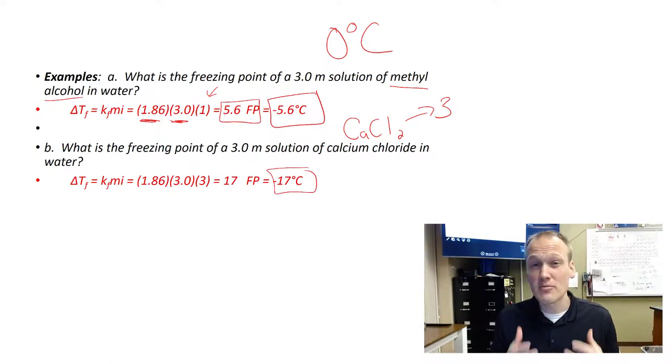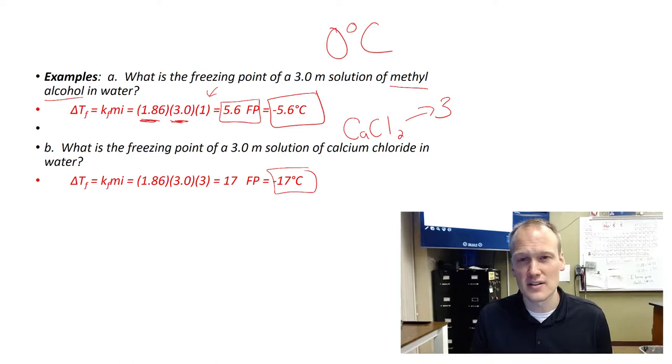There are other colligative properties. Vapor pressure is changed by the amount of solute and osmotic pressure is changed by the amount of solute, but both of those will be dealt with in an AP Chem course. For this course, all you have to do is know how to make the calculations for boiling point elevation and freezing point depression. Take the time to look at the activity and work through the problems, and let me know if you have any questions. We'll see you soon.